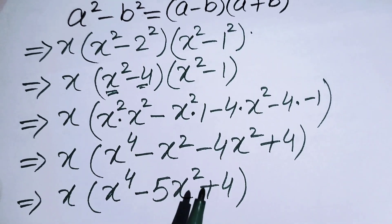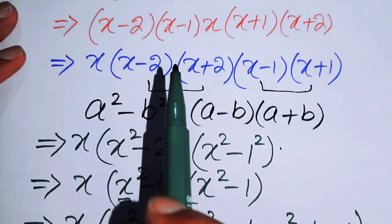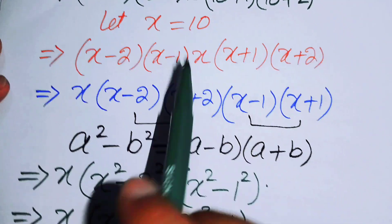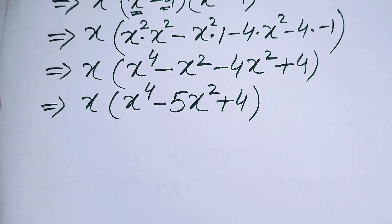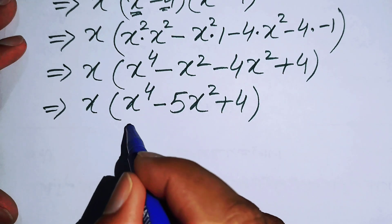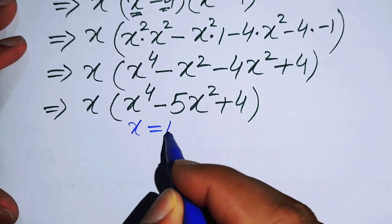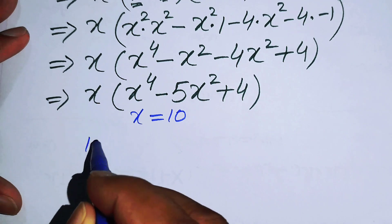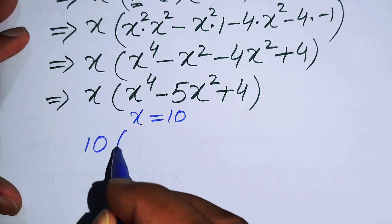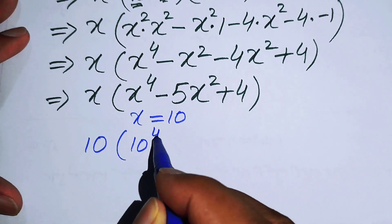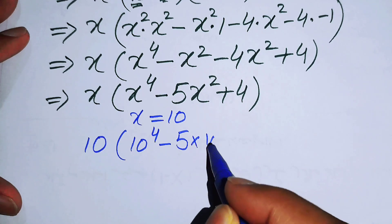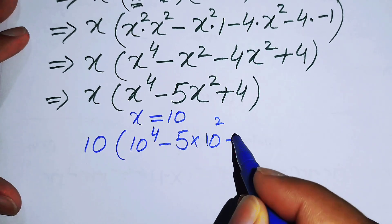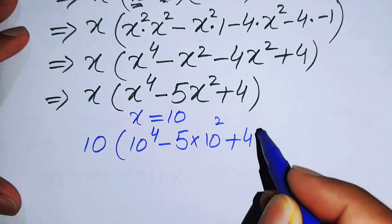Now we back-substitute the value of X. At the start we set X equal to 10, so we substitute X equals 10 to get: 10 times (10 to the power 4 minus 5 times 10 squared plus 4).